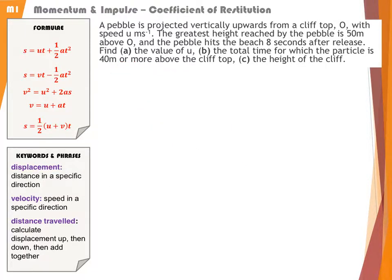Next we're asked to find the total time for which the particle is 40 metres or more above the cliff top. Re-sketching, this is 31.3, acceleration is 9.8 downward. I'm looking for where it crosses the 40 metre line, so I can look at the total time spent between them, 40 metres or more above the cliff top.